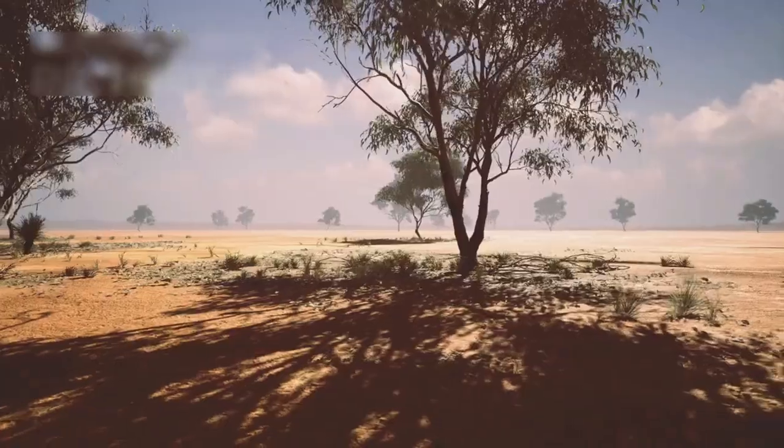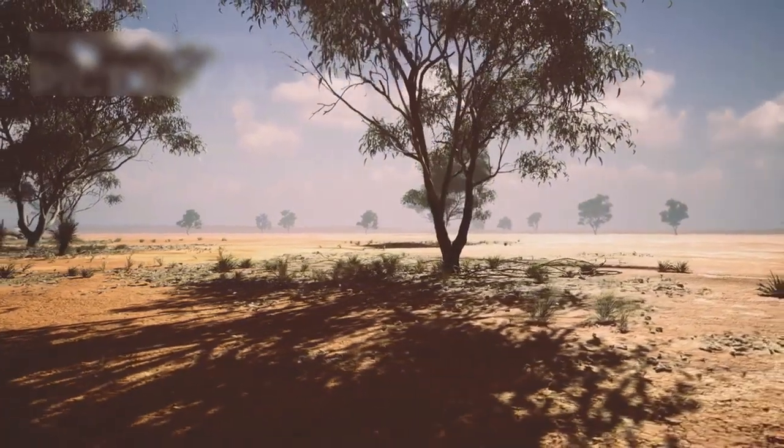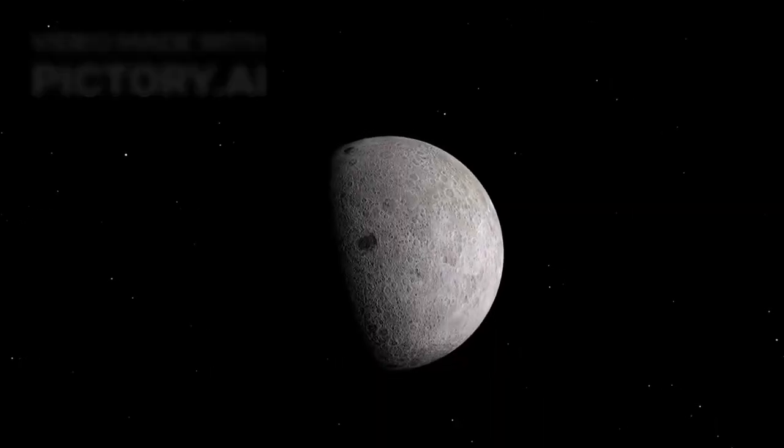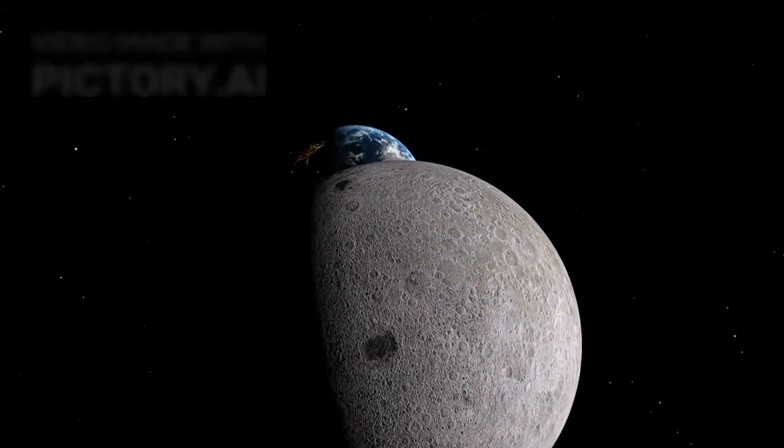Proxima b, in its contradictions, offers a mirror. It shows us how easily life's cradle could crack, how light can vanish, how shadows can overtake. Its existence is both hopeful and haunting, an echo of what might be.